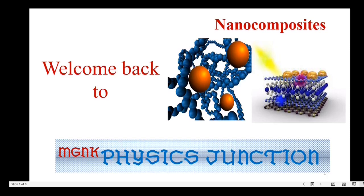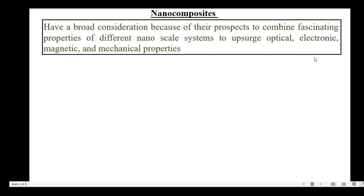Welcome back to Physics Junction. In today's video, let me talk about nanocomposites. Nanocomposites are a new class of materials which have broad consideration because of their prospects to combine fascinating properties of different nanoscale systems to enhance optical, electronic, magnetic and mechanical properties.